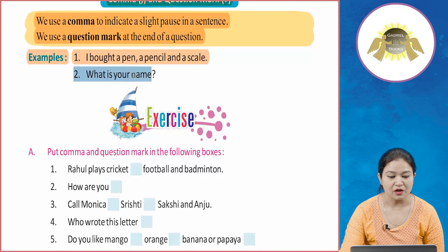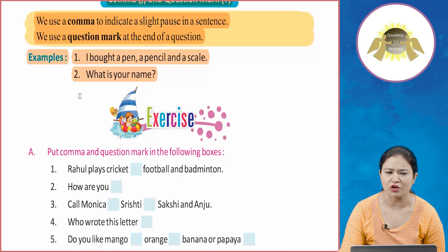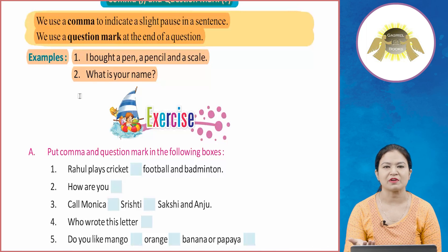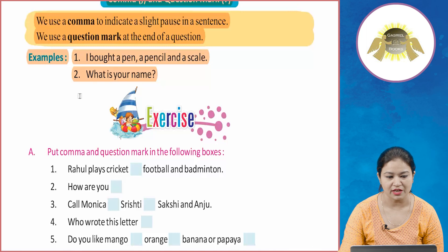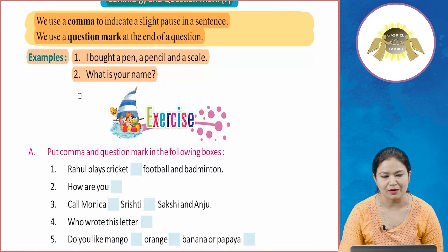Now for a question mark example: 'What is your name?' This is not a simple sentence — it is a question. So we put a question mark at the end: 'What is your name?' The use of a question mark should now be clear.